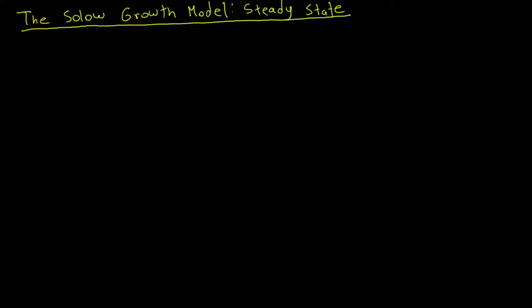Let's establish what a steady state is, but first let's reestablish our endogenous variables for this model. We're dealing with per capita terms here, so we have capital per capita, GDP per capita, consumption per capita, and investment per capita.